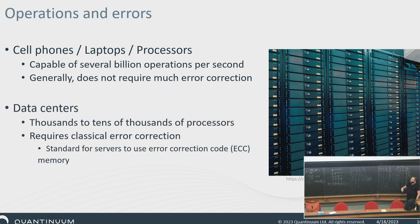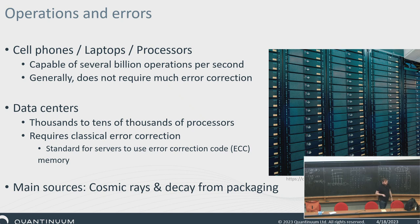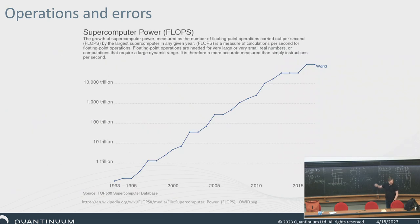However, for data centers, you start to have thousands or tens of thousands of processors, so that's where it starts to become important. It's common for servers to use ECC RAM — error corrected code memory. The main sources of error for classical systems are cosmic rays or decay from particles in the packaging. Los Alamos noticed an issue where their high-performance computers had a weird amount of error, and it turned out that being a mile above sea level — having a thinner atmosphere — was actually increasing the error rate.